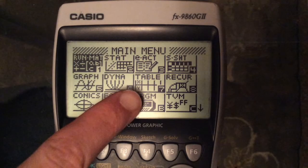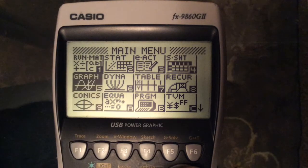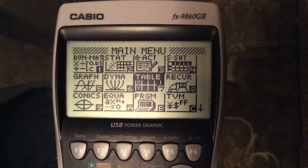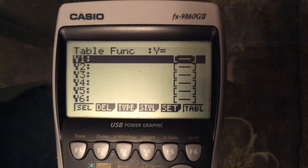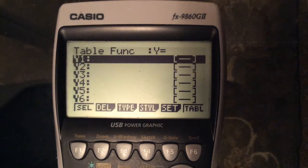So the mode that we want for tables is the table mode there. Navigate to it using the arrows as you would normally or by pressing 7 to get into that part. When you get in there you should see a screen that looks almost exactly the same as for drawing graphs.